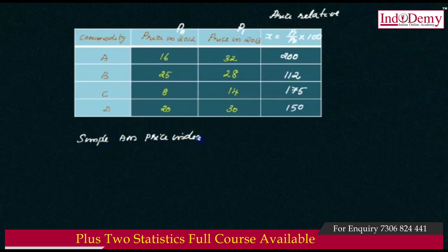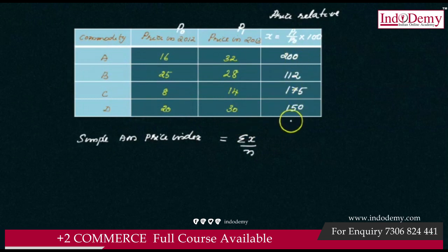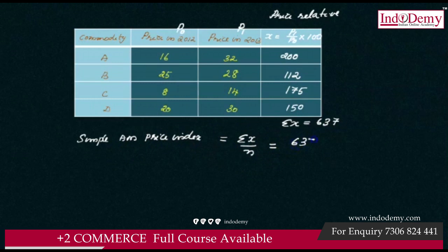The arithmetic mean price index is equal to summation x divided by n, where n is the number of commodities, that is 4. Summation x is 637. Therefore the arithmetic mean price index is 637 divided by 4, which gives the answer 159.25. That is our first answer.